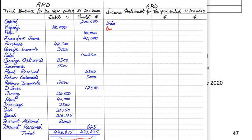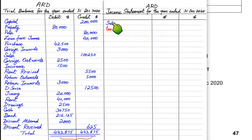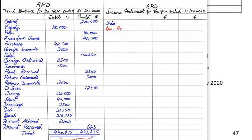In an income statement, we have sales, also known as revenue. This is the amount received when we sell our goods — the collective selling price of all goods sold. We then need to deduct return inward from this, which is when customers return goods to us. This is also known as sales return.